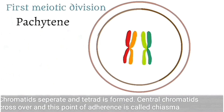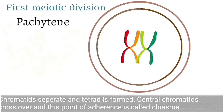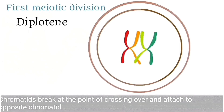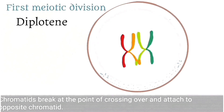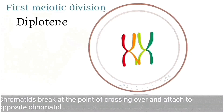In the pachytene stage, the chromatids separate and a tetrad is formed, and the central chromatids cross over. This point of adherence is called the chiasma. In the final stage of prophase, the diplotene stage, the chromatids break at the point of crossing over and attach to the opposite chromatid. The event of crossing over in meiosis is very important, as it means that daughter cells do not resemble parent cells.